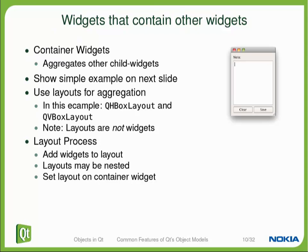What you've seen in this demo was a regular QWidget containing other widgets — this is something very common in Qt. There are other widgets mostly used to arrange others, usually called container widgets. Container widgets aggregate other child widgets, just like in our example. To lay out the child widgets within a container widget, you would normally use a layout — horizontal, vertical, box, or grid. You add your child widgets to that layout, add the layout to the container widget, and when you show the container widget, the layouts will automatically arrange the geometry of the child widgets.